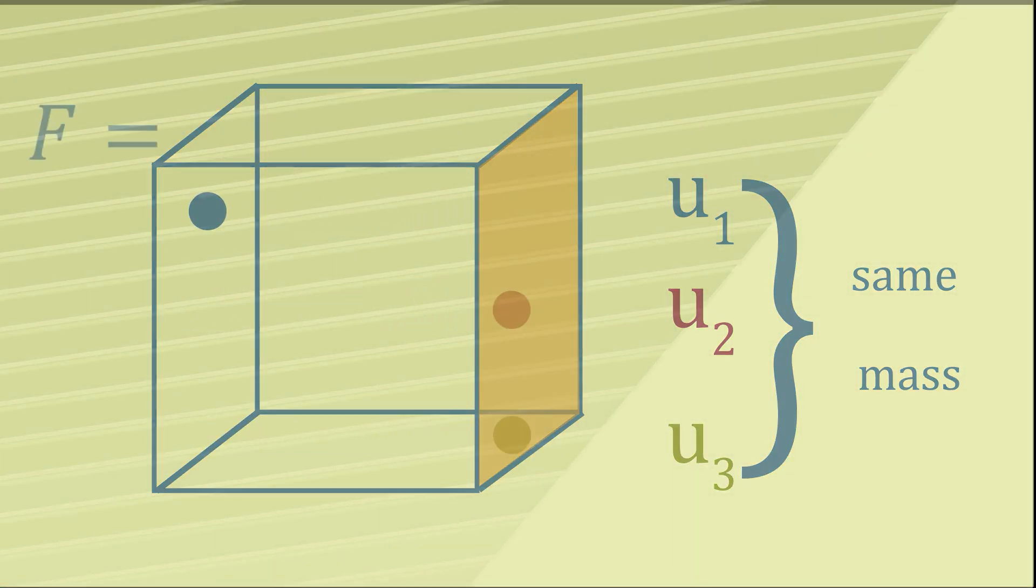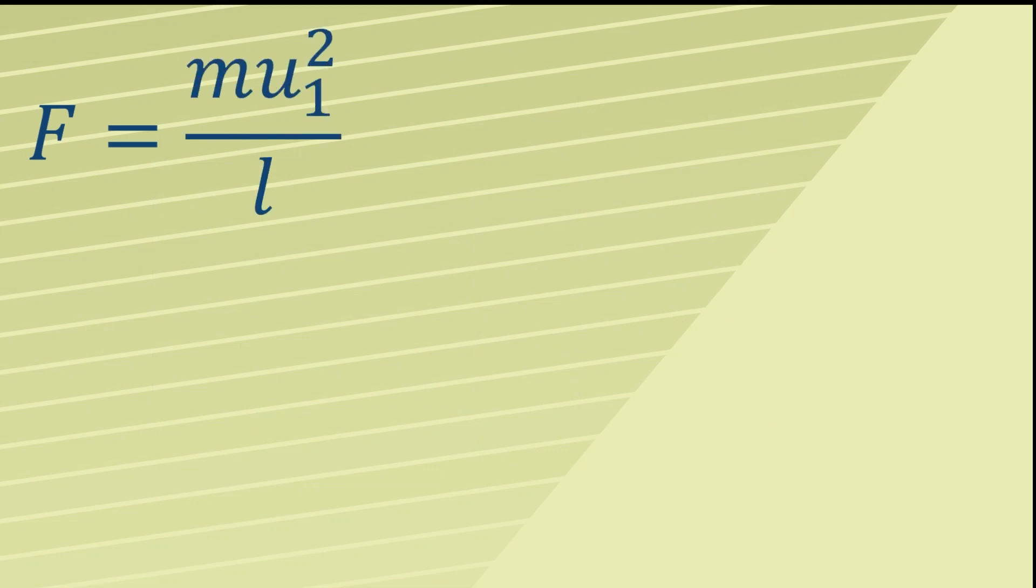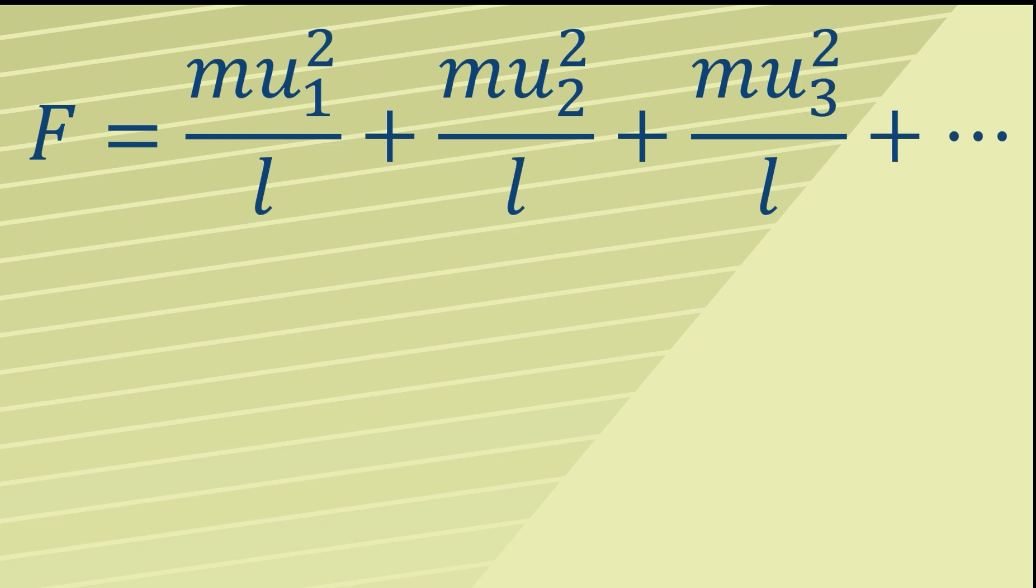You just add the force from each one: in other words, mu₁² over L plus mu₂² over L plus mu₃² over L, plus dot dot dot.